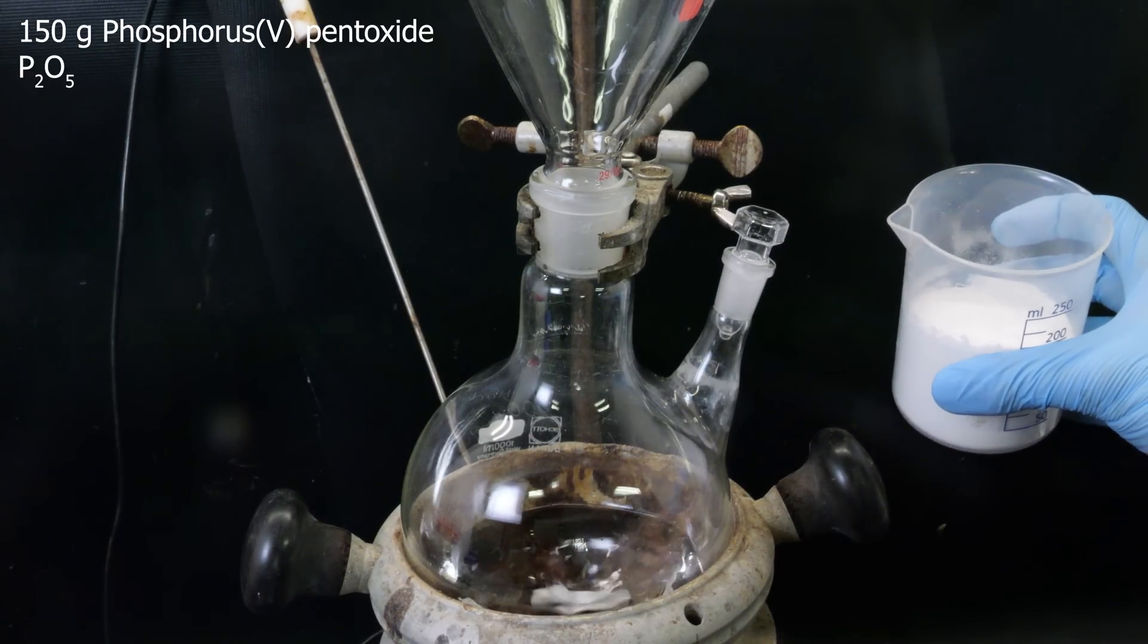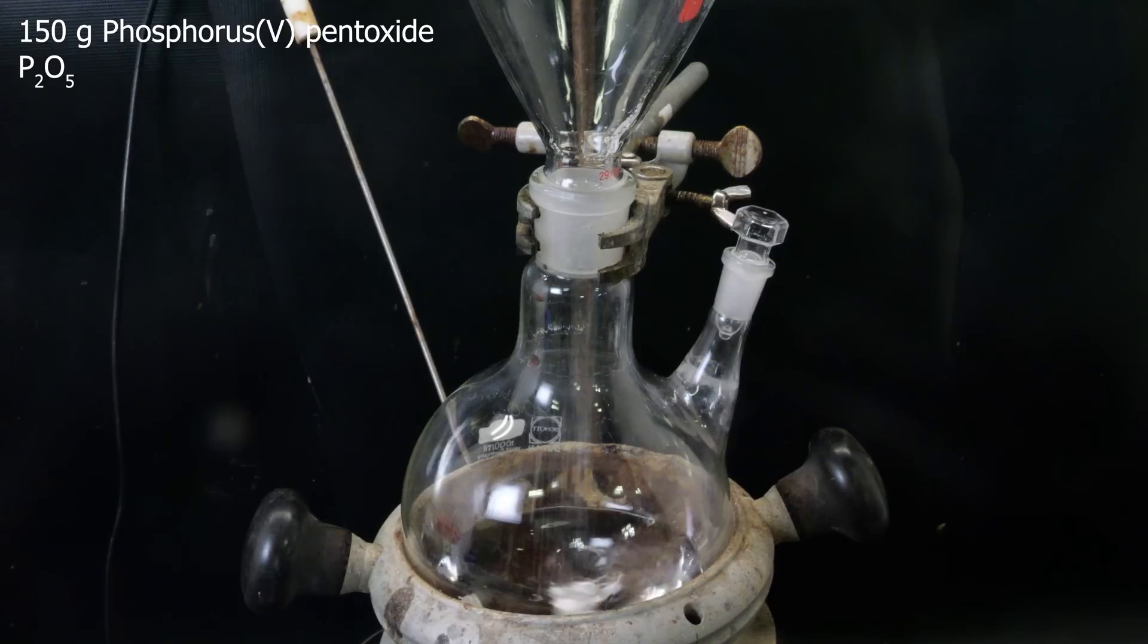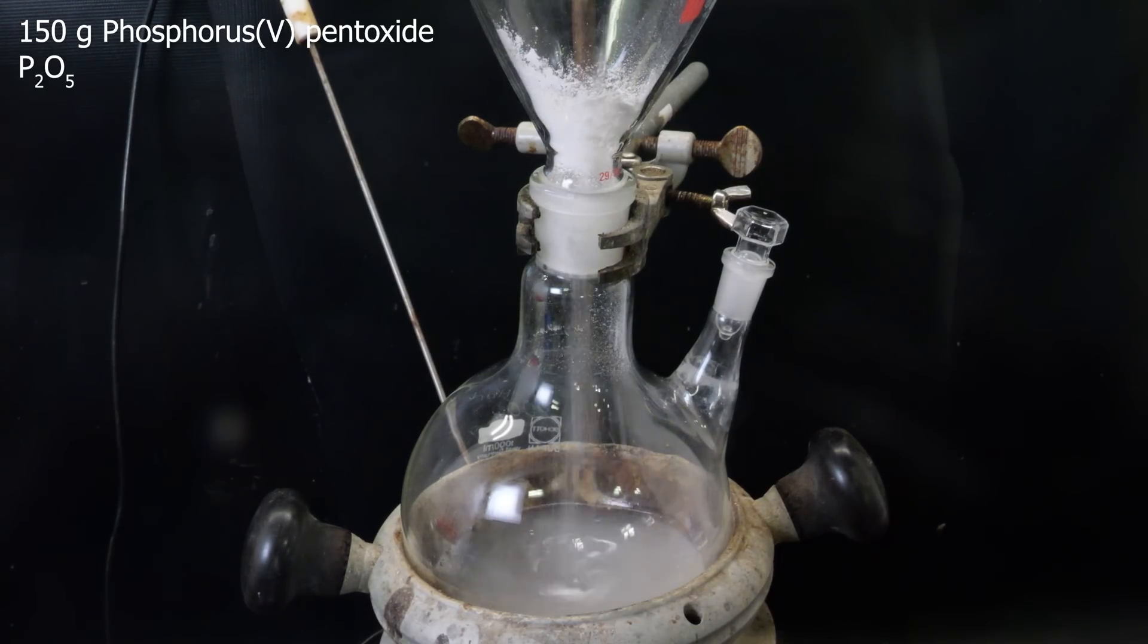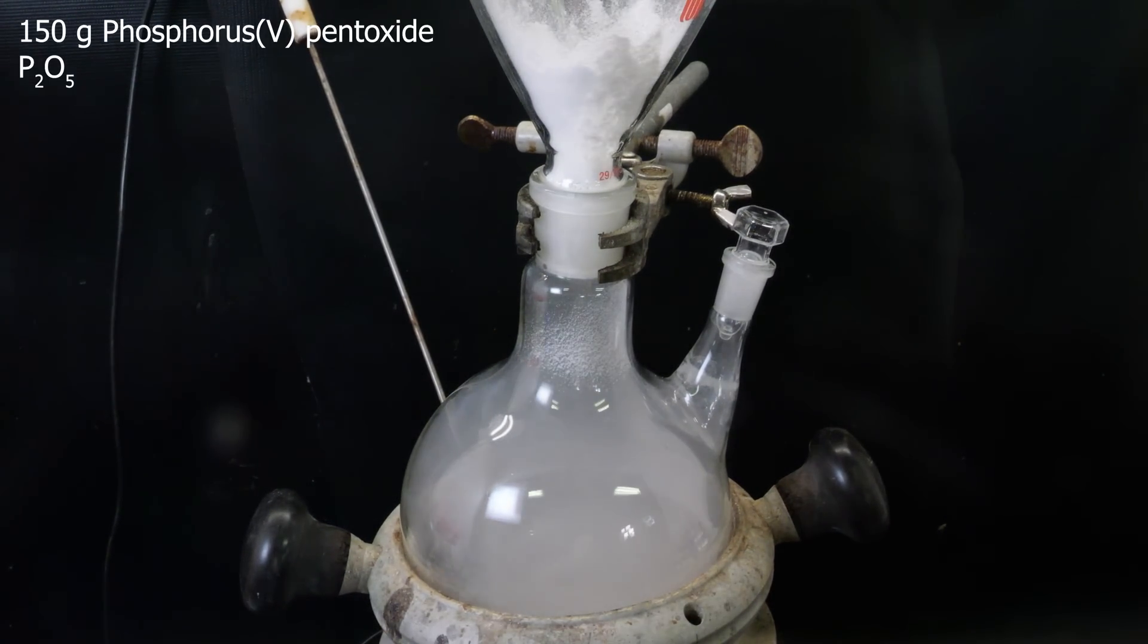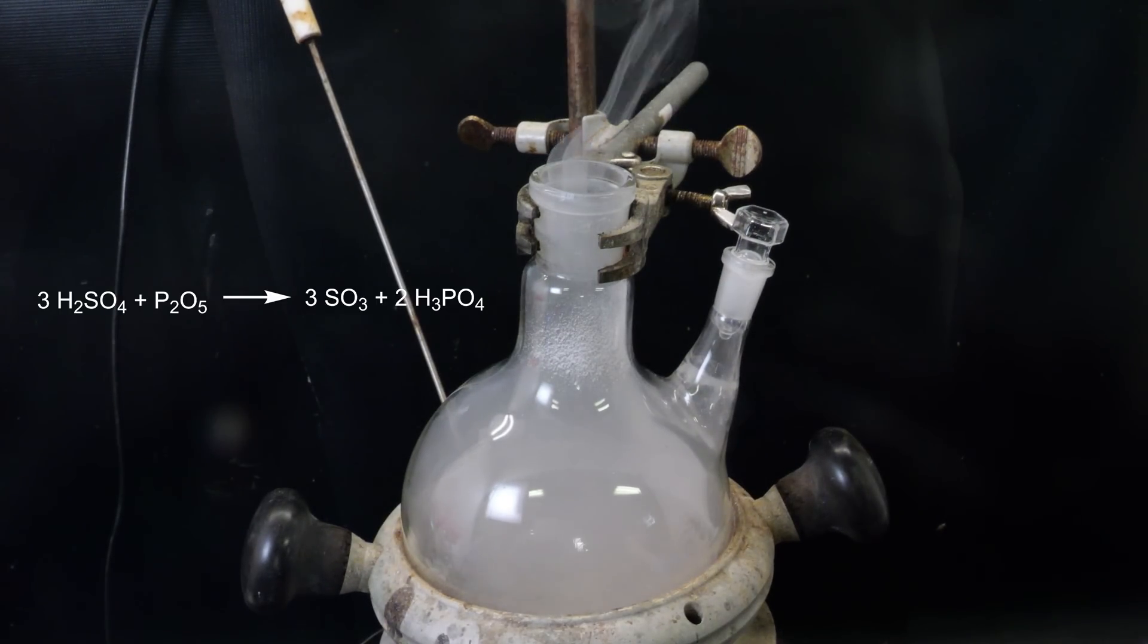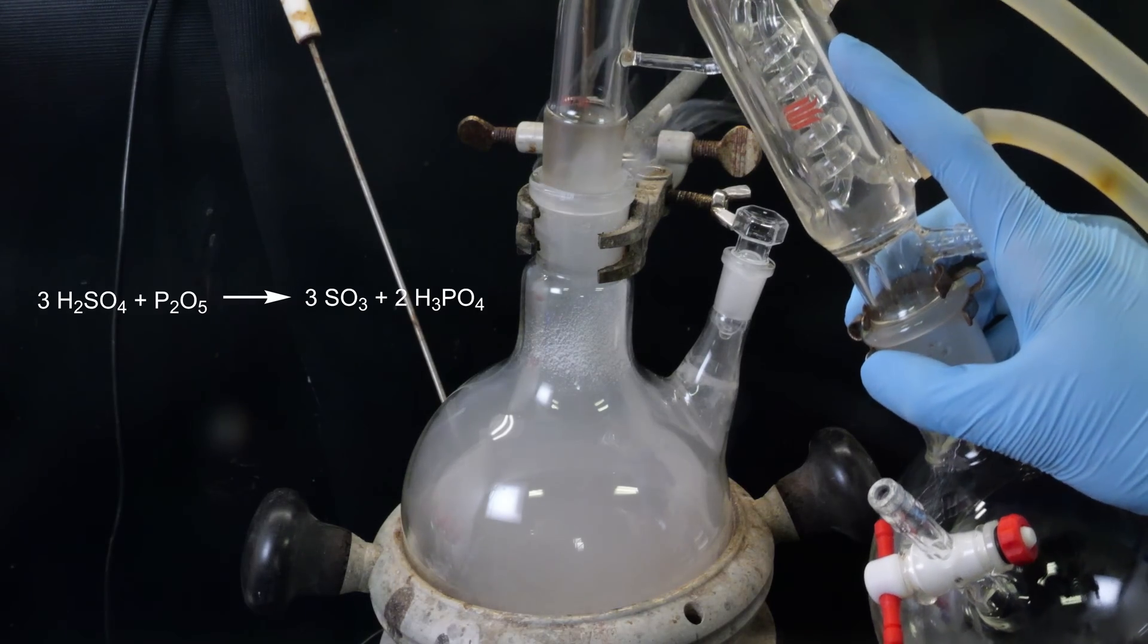While stirring, I gradually add 150 grams of the dehydrating agent phosphorus pentoxide, which is an excess. This should react pretty much instantly to form sulfur trioxide and phosphoric acid.